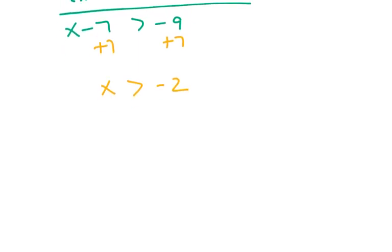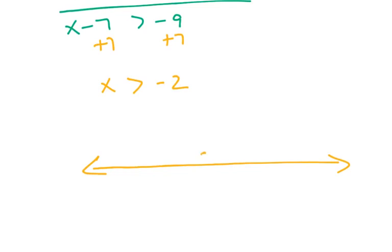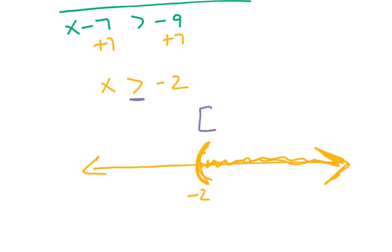Sometimes they'll ask you to graph it. So we start with negative 2 and shade to the right. We draw a parenthesis because we are just greater than — we are not including. If we were including, we would have a line under, and instead of a parenthesis, this would become a bracket. So it's a parenthesis because it does not include negative 2; the solution is all values to the right.